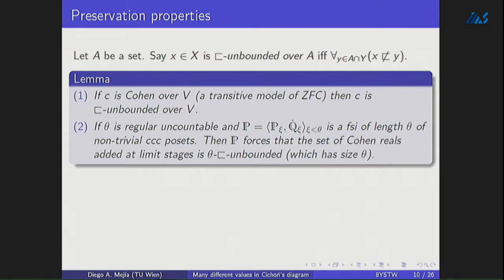Extending this: if we have a θ regular uncountable, and we have a finite support iteration of length θ using non-trivial CCC forcings, then at limit stages we are adding Cohen reals. These Cohen reals added at limit stages actually become a θ-unbounded family. The reason is that if you have a small set of reals from Y of size less than θ, then as the iteration has length θ, these reals appear already at an intermediate step, and then at the next limit step ahead there will be a Cohen real that cannot be dominated by the reals from where you started. So you have a θ-unbounded family of size θ.